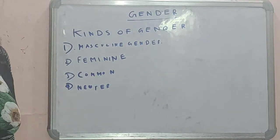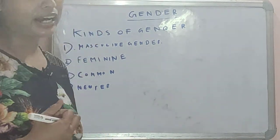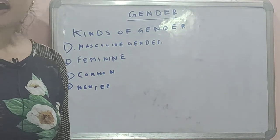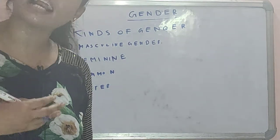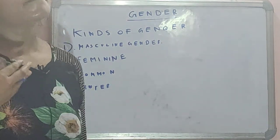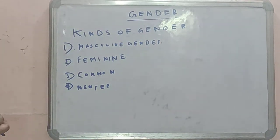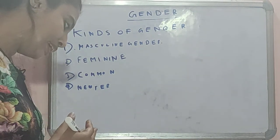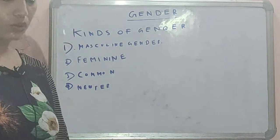Objects noted for strength, violence, and power are treated as masculine gender. That means things which denote power, moral strength are all categorized as masculine gender. For example: sun, summer, winter, monsoon, death — these are examples of masculine gender.